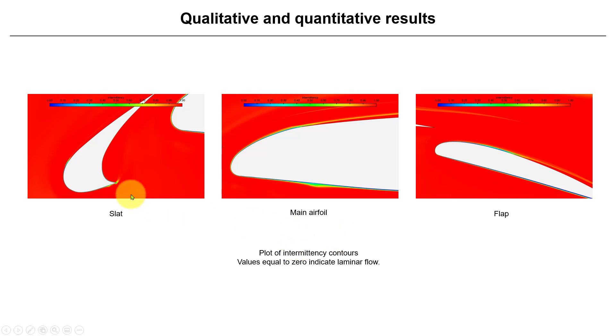When we look at the intermittency field this is what we see. Remember where you have near zero means that you have all this region laminar and then you have the onset of the transition to turbulence, and the same here.